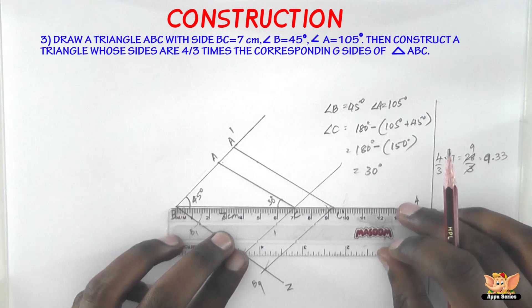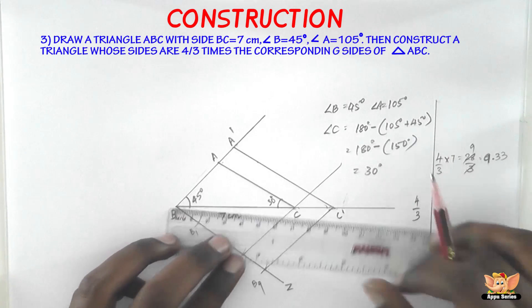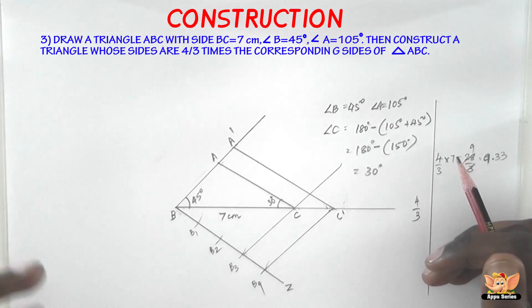So let's just measure BC' now. Yeah, exactly. It is 9.333. So hence the triangle.